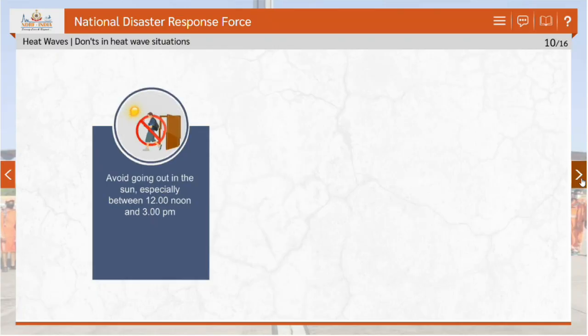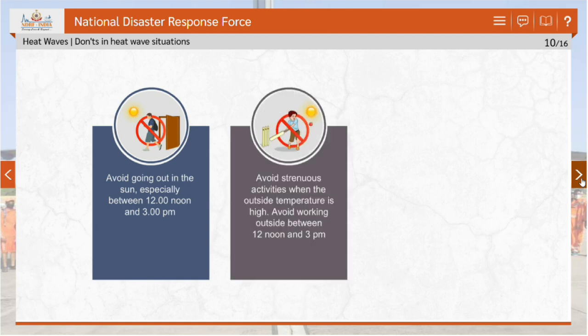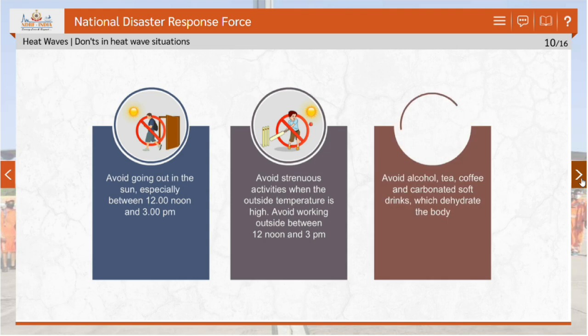Avoid going out in the sun, especially between 12 noon and 3 p.m. Avoid strenuous activities when the outside temperature is high. Avoid working outside between 12 noon and 3 p.m. Avoid alcohol, tea, coffee and carbonated soft drinks, which dehydrate the body.